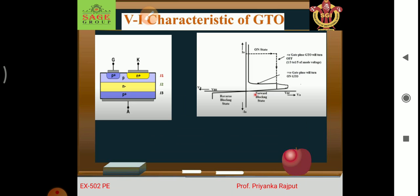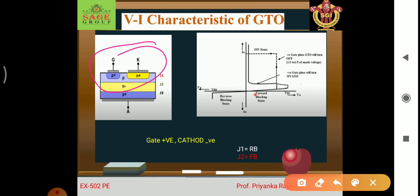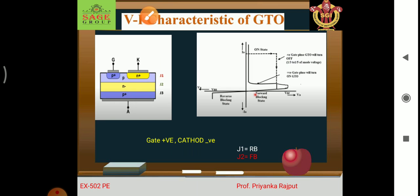Now the VI characteristic of GTO. In this characteristic: when we connect the gate terminal with positive polarity, junction J1 is in reverse bias, junction J2 is in forward bias, and junction J3 is in reverse bias.